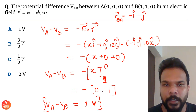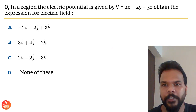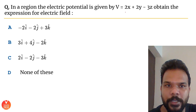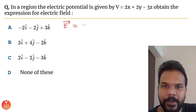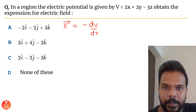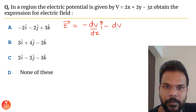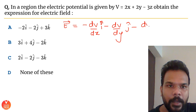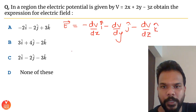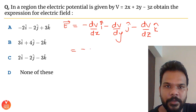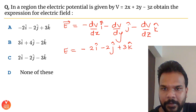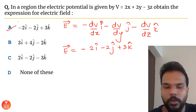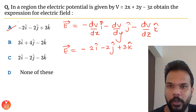Question 13: In a region the electric potential is given; find the expression for electric field. Using E = −dV/dx î − dV/dy ĵ − dV/dz k̂, differentiation gives E = −2î − 2ĵ + 3k̂. The answer is option A.